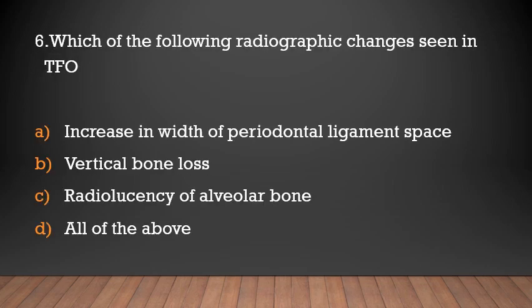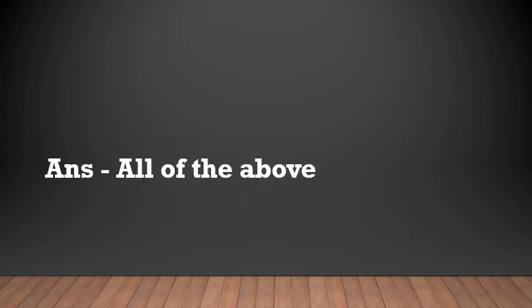Which of the following radiographic changes are seen in TFO? Increasing width of the periodontal ligament space, vertical bone loss, radiolucency of alveolar bone, or all of the above. The answer is all of the above.